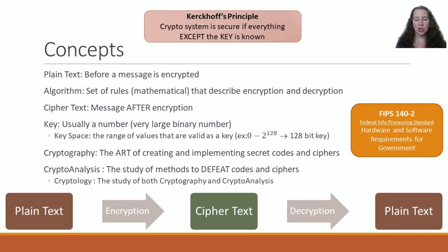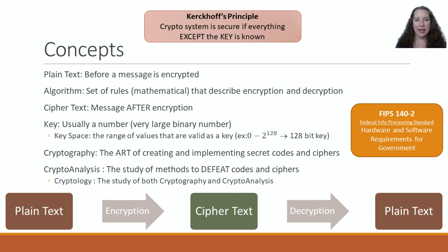If you remember your powers of 2: 2, 4, 8, 16, 32, 64, 128, 256, and so on. We haven't even gotten to 2 to the 10th yet. Keys are always thought of in terms of how many bits they are — 64-bit, 128-bit, 256-bit. The key space is from zero to that high number, so 2 to the 10th would be a key space of zero to 1024. Cryptography is the art of creating and implementing secret codes and ciphers, whereas cryptanalysis is the study of methods to defeat those. Cryptology is the study of both at the same time.